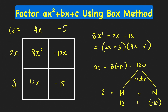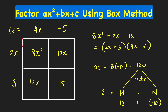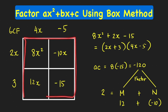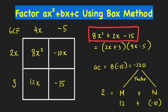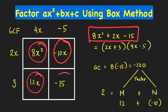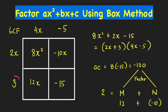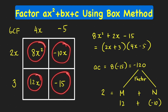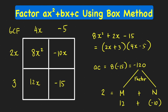A nice feature of this box method is that these expressions appear to represent lengths. The length of one side is 2x plus 3 and the length of the other side is 4x minus 5. When we multiply them, we get the area of this rectangle. The area equals the sum of the four areas inside the box. This makes intuitive sense when all terms are positive, though the box method works even when we have negative signs.